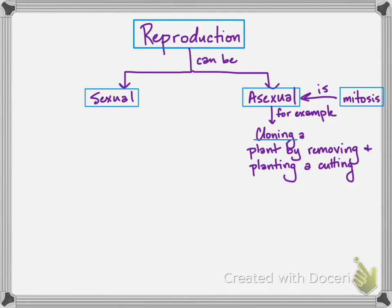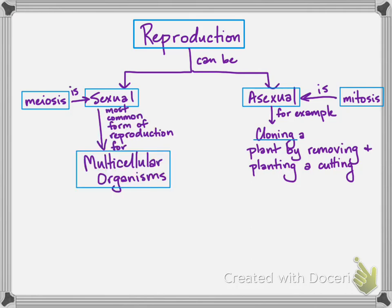Most multicellular organisms, outside of plants, reproduce by sexual reproduction, and that involves meiosis — splitting the parent cell's genetic material in half and combining it with a second parent, so that every generation gets a new version of the scrambled gene combinations that are possible when you halve the genetic material and then recombine it with another individual.